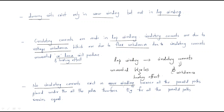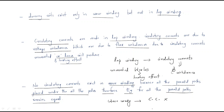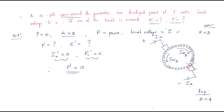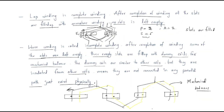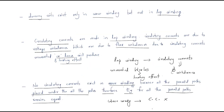No circulating currents exist in wave winding. This is because all parallel paths are placed under all poles, so all parallel paths experience the same flux. Therefore, the generated EMF for all parallel paths remains equal, and no circulating current is possible. Lap winding has circulating currents; wave winding does not. This covers the problem and the important points regarding lap winding and wave winding.